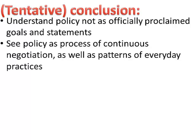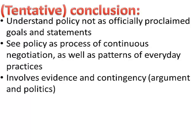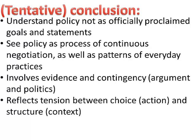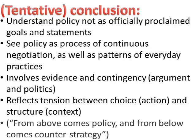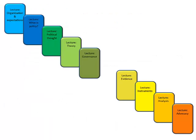I will talk about a phenomenon called the street-level bureaucrat — people who implement policy and tweak it to their own purposes — so policy implementation may not always follow the lines that have been ideally described. Policy involves evidence and contingency, but also argument and political processes, trade-offs, discussions about who gets what, and the evidence needs to be constructed in certain ways. Policy reflects tension between choice for action and structure and context. The bottom line is: from above comes policy, and from below comes counter-strategy. Whatever you think as a bureaucrat, you should be vigilant that there is a counter rule. This is the second lecture — what is policy. Next, we will talk about political thought, governance, evidence, policy instruments, policy analysis, and advocacy for policy.